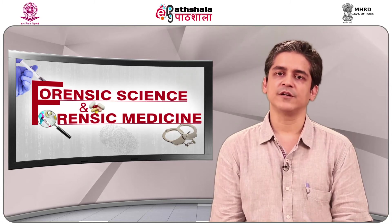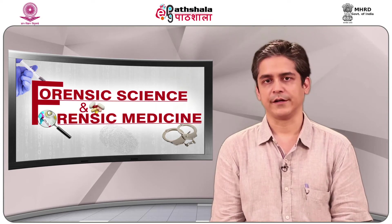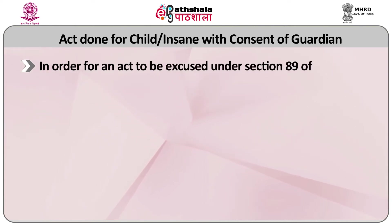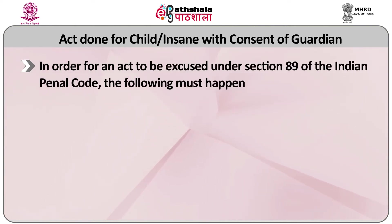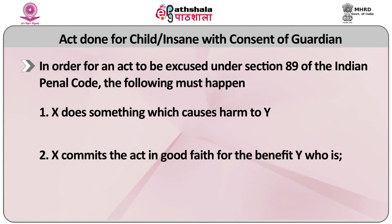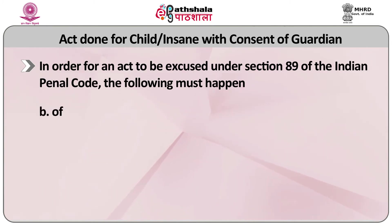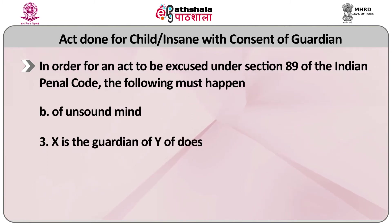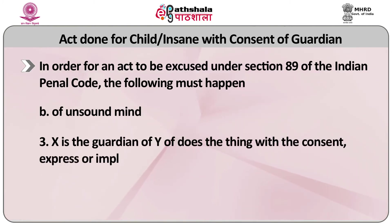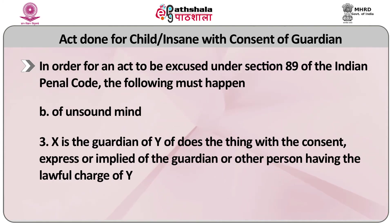Now we'll deal with the excusable defense of an act done for a child or an insane person with the consent of a guardian. In order for an act to be excused under section 89 of the Indian Penal Code, the following must happen: X does something which causes harm to Y; X commits that act in good faith for the benefit of Y, who is either under 12 years of age or is a person of unsound mind; X is the guardian of Y, or he does that act with the consent of whoever is the guardian of Y.